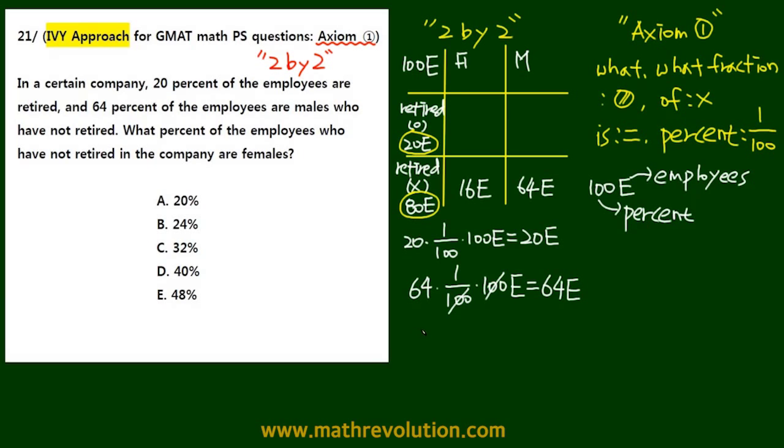Now, our final question was, what percent, so something times 1 over 100, times, because it's of, so we multiply 80E, the number of employees not retired, and this is equal to 16E, female.